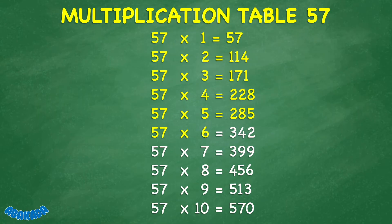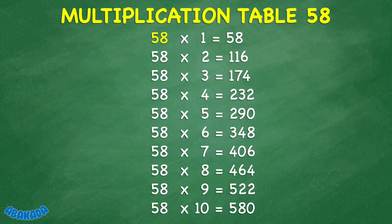57 times 6 equals 342. 57 times 7 equals 399. 57 times 8 equals 456. 57 times 9 equals 513. 57 times 10 equals 570. 58 times 1 equals 58.